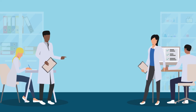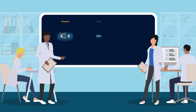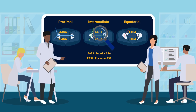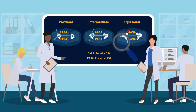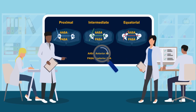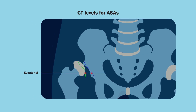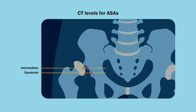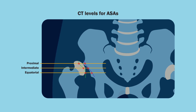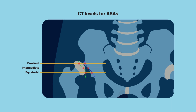To this end, researchers sought to define thresholds for hip dysplasia by measuring anterior and posterior ASAs at three axial CT levels: equatorial, intermediate, and proximal ASA.